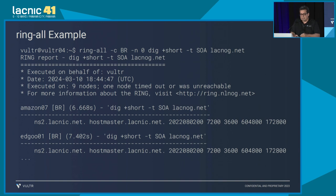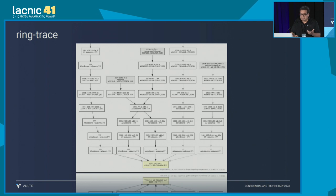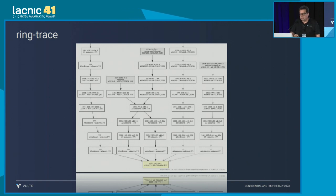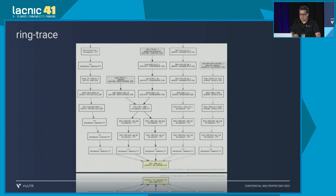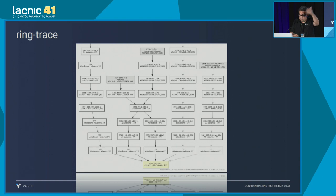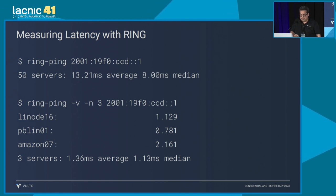Ring trace is fun because it will show me an image of how packets travel using different machines. You can see there are several in Europe, some in South America, and others in Asia, all going to the same anycast IP that I'm propagating to the Internet, and they have access from different places.